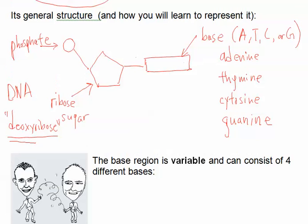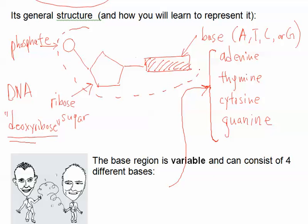The base region is variable and can consist of four different bases. I've just mentioned that right here. So this rectangular bit here is called the base region, and it's made up of these four. It could be one of those four bases. Now, when we draw, you can consider this one little Lego unit here. This is one little Lego unit. When we combine a bunch of them together, you should be able to see how it starts to look like DNA, and we're going to do that next.